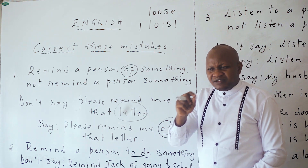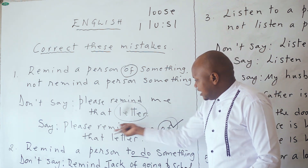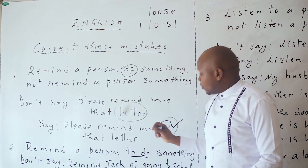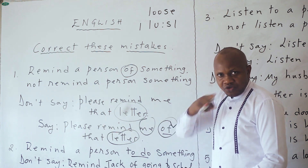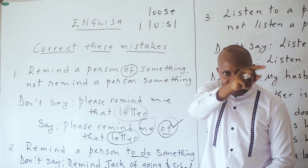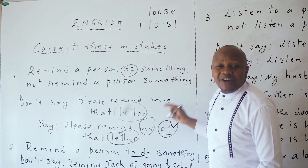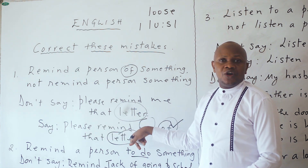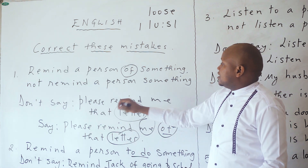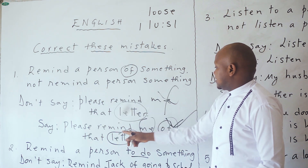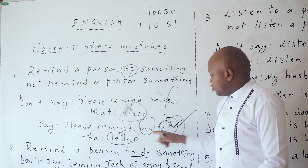Don't say 'remind me that letter.' Yes, someone can understand you, but it's better to say 'remind me of that letter.' You remind someone — me, you, him, Chantal, Janet, John, Mary. You remind Mary of something. Don't say 'please remind me'; say 'please remind me of.' Remind me of that letter, not remind me that letter.